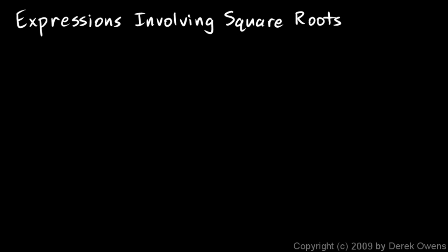Here's another important topic: expressions involving square roots. You need to be able to simplify mathematical expressions that involve square roots. We'll start with some simple examples. The square root of x squared — the square root of x squared is x, because the square root of anything squared is just that thing. The square root of x squared is x. Keep that in mind and look at the next example.